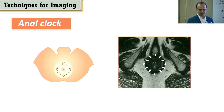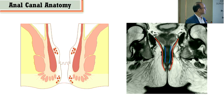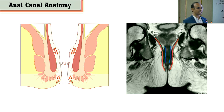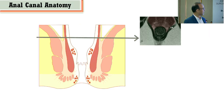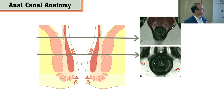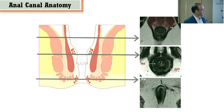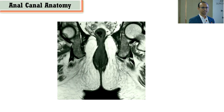The anal clock follows lithotomy positioning. On MRI anatomy, the internal sphincter appears as a thin blue ring, with the levator above and the external sphincter as the red ring. The intersphincteric space lies between them. In axial views at the levator level, we see a half U-circle of levator, then a tube-within-tube configuration: the outer tube is the external sphincter, the white area is the intersphincteric space, and the inner tube is the internal sphincter.